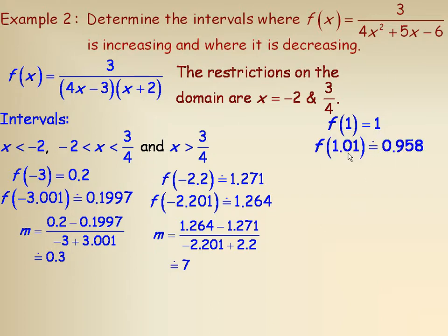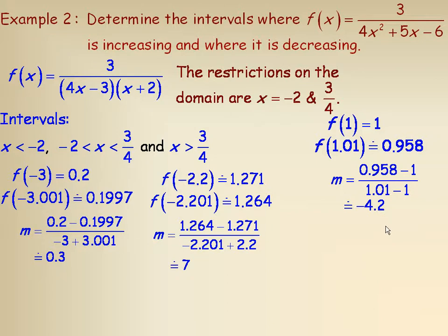Taking x = 1.01, I get y ≈ 0.958. Finding the slope of the secant between those two points — subtracting the y values over the difference in x values — I get a slope of about −4.2. So there's a fairly steep negative slope; the graph is decreasing there.